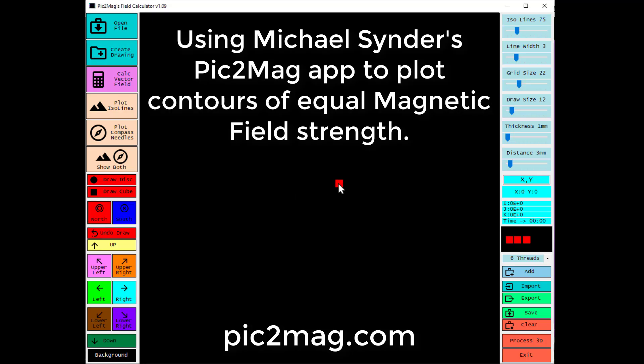Using Michael Snyder's Pick2Mag app to plot contours of equal magnetic field strength. You can find this at pick2mag.com.